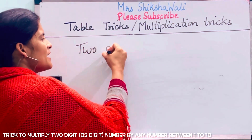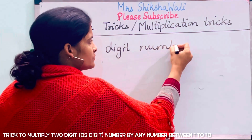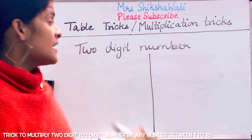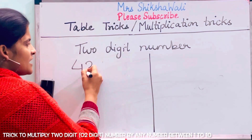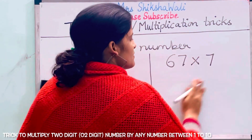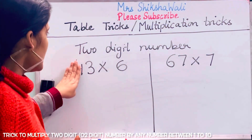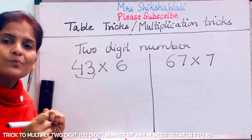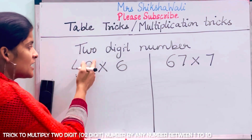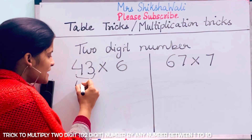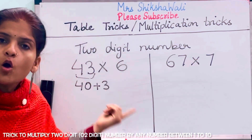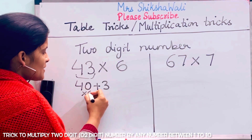Suppose we have a two-digit number: 43, multiplied by 6. You have to break it up into the nearest ten — so 43 becomes 40 plus 3. Now: 40 × 6 plus 3 × 6. That is the law — expand the number and multiply each part.